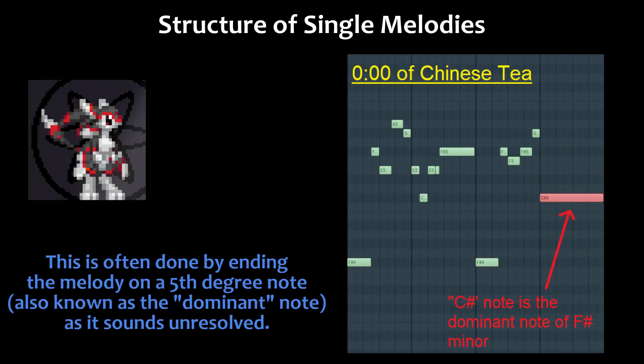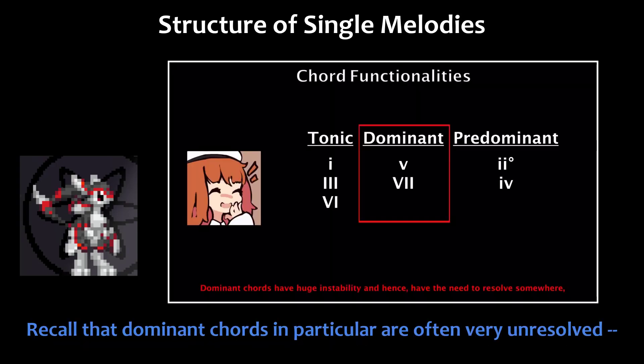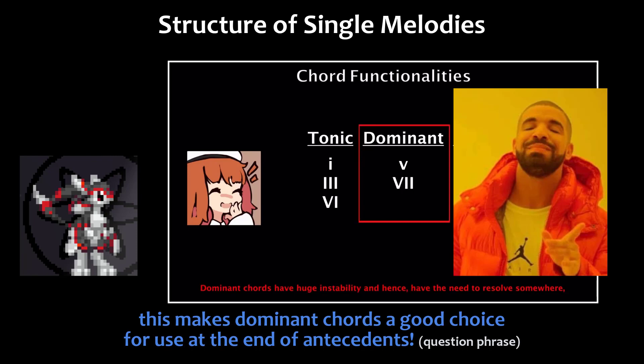This is often done by ending the melody on a fifth-degree note, also known as the dominant note, as it sounds unresolved. As you learned previously, chords have different functionalities. Recall that dominant chords in particular are often very unresolved, which makes dominant chords a good choice for use at the end of antecedents.